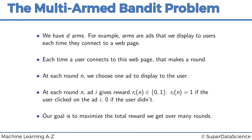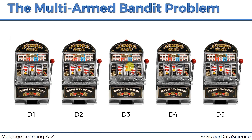A quick summary of the multi-armed bandit problem: we have d-arms — for example, arms are ads that we display to users each time they connect to a webpage. A modern application of the multi-armed bandit problem is advertising. The algorithms we're applying can be used to solve the problem of displaying ads, figuring out which ad is the best performing one on the fly, without doing an A-B test.